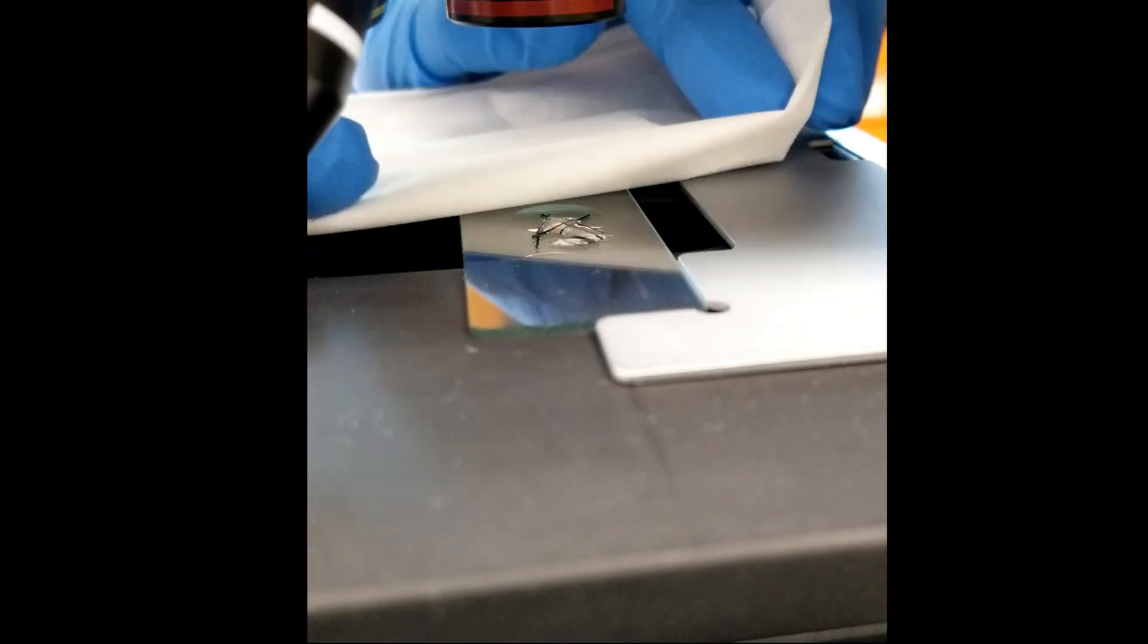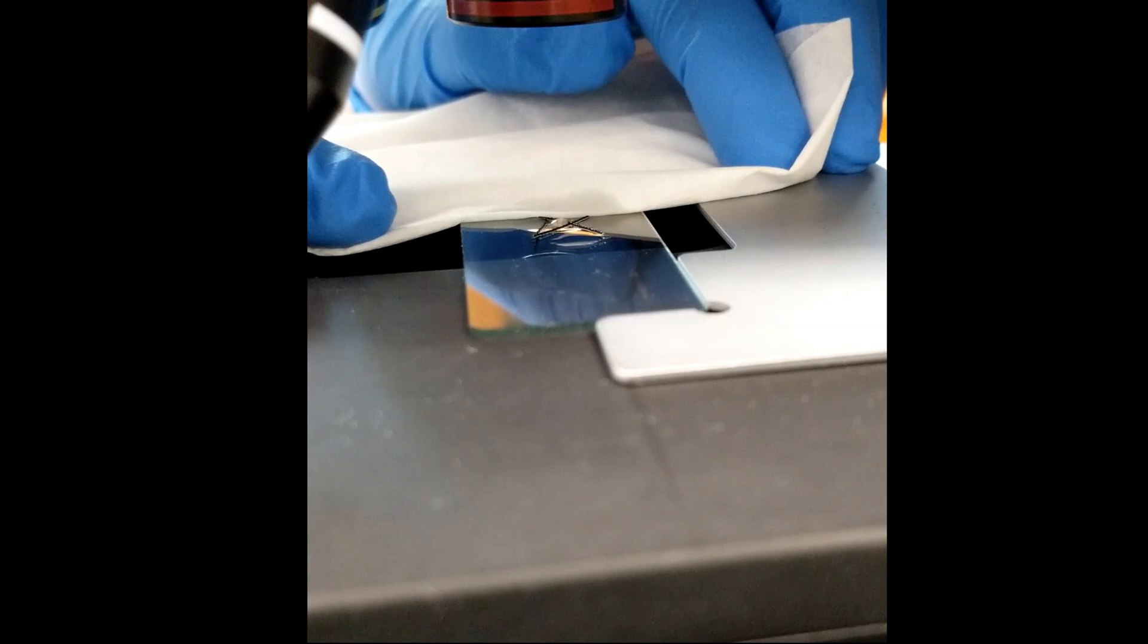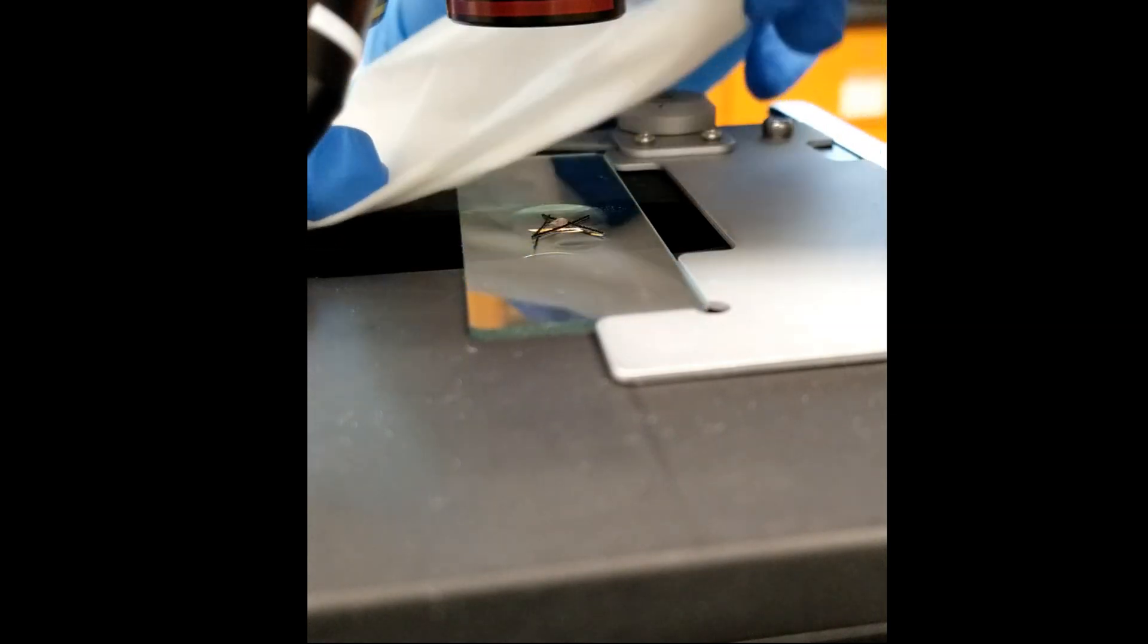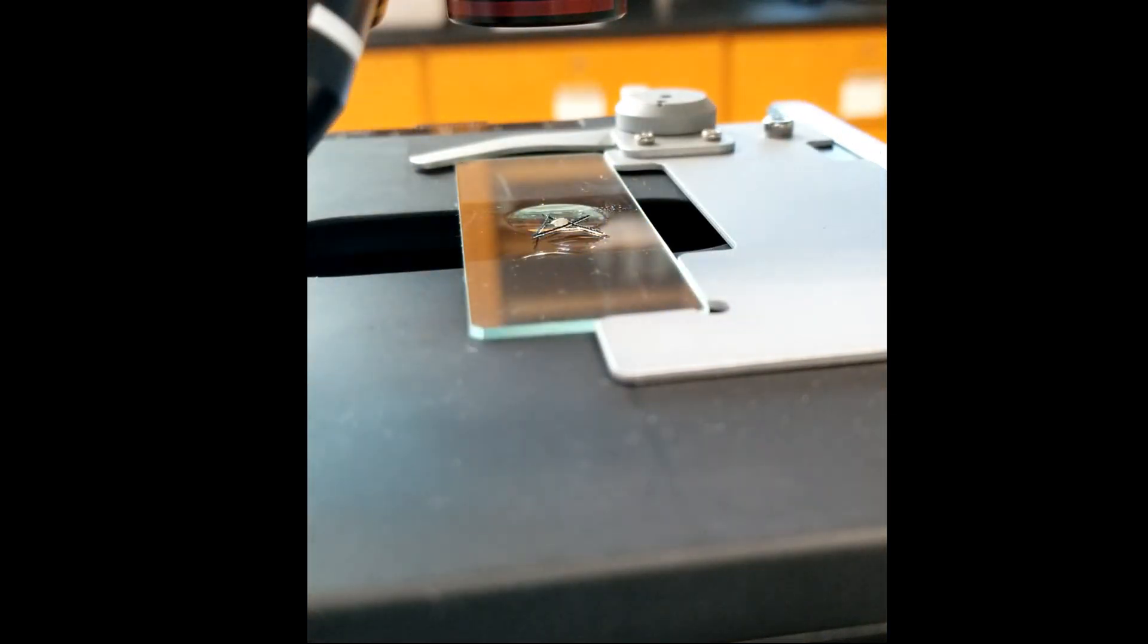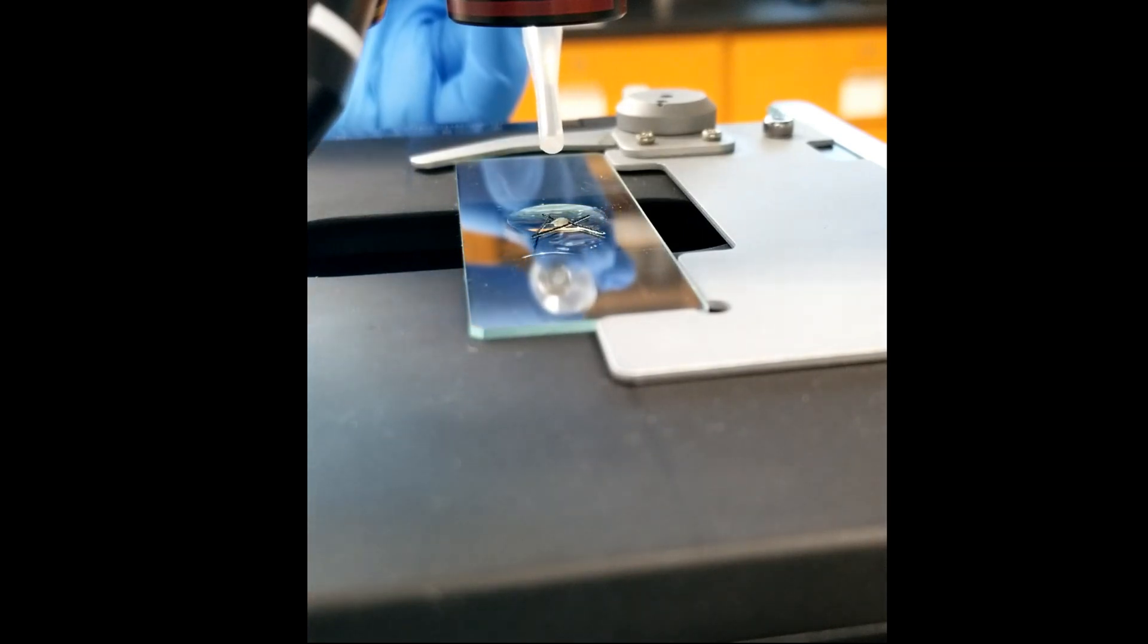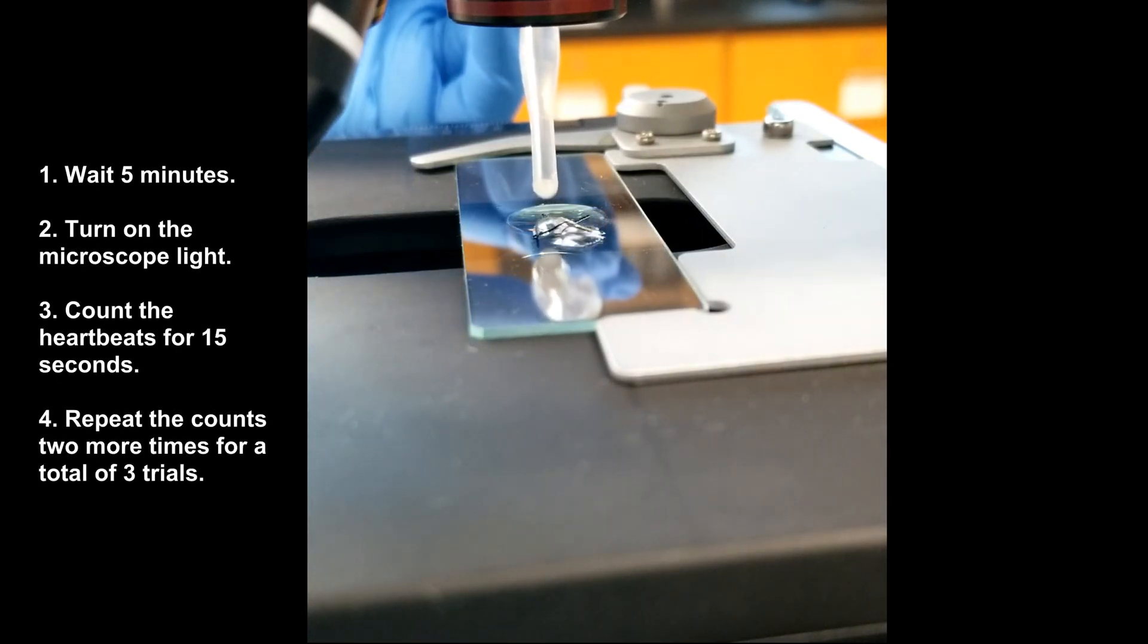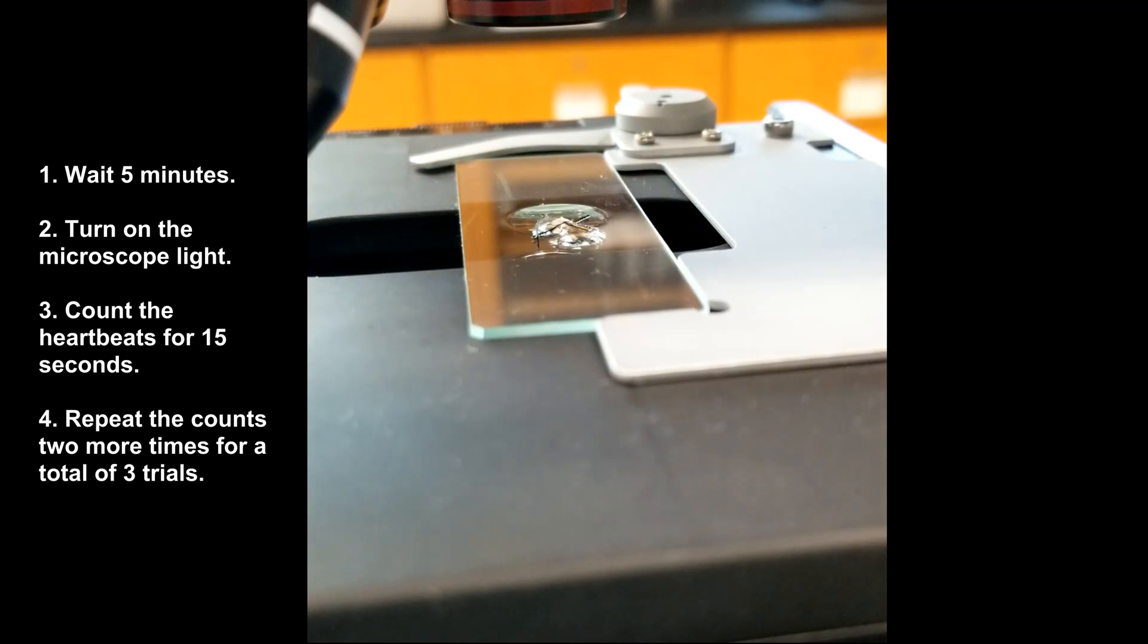To remove the water from around your Daphnia, place a tissue at the edge of the droplet to absorb the water. Be careful not to touch the Daphnia with the tissue as the Daphnia may stick to the tissue or get damaged by it. Immediately add a drop of your test solution to the Daphnia. Ensure that the Daphnia is immersed in the new solution. Wait five minutes, then turn on the microscope and count the heartbeats for 15 seconds three times.